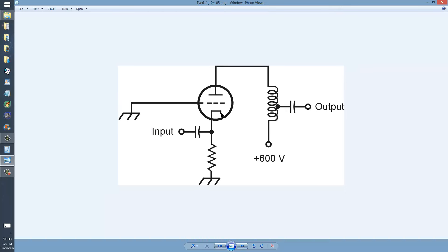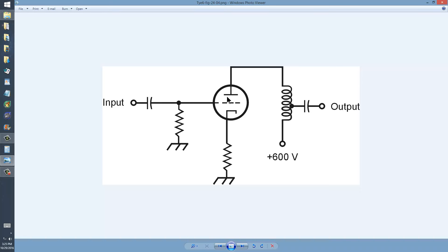In the grounded grid circuit, the input is put onto the cathode instead of the grid. So there is an intervening electrode between the input and the output, and that intervening electrode is the control grid which is grounded. That greatly reduces the capacitance between the cathode and the plate, or the input and the output here, as opposed to the capacitance between the control grid and the plate, or the input and the output here.